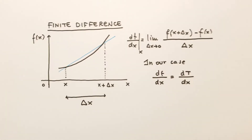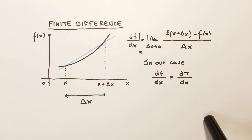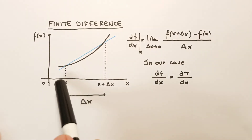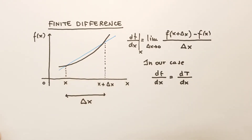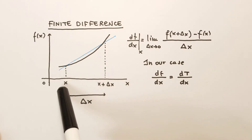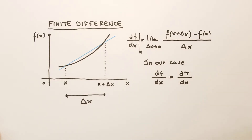For the finite difference approximation, we have to go back and think about the definition of the derivative. If we have a function as a function of x and want the derivative at point x, this is the definition: we take the limit of delta x going to 0, where delta x is the distance along x between point x and another point x plus delta x. By taking the limit of this ratio we have the mathematical definition of the derivative. In our conduction problem, f will be the temperature.